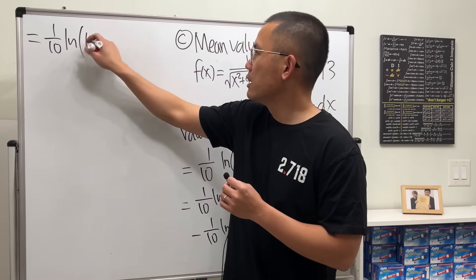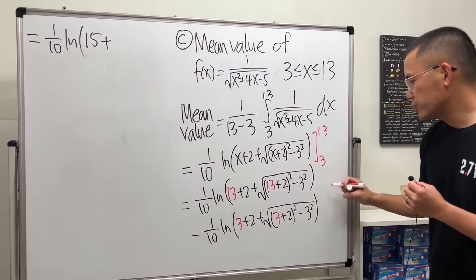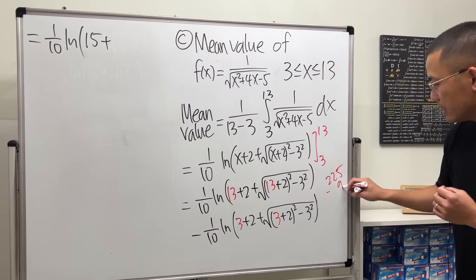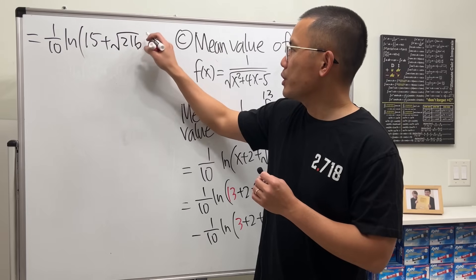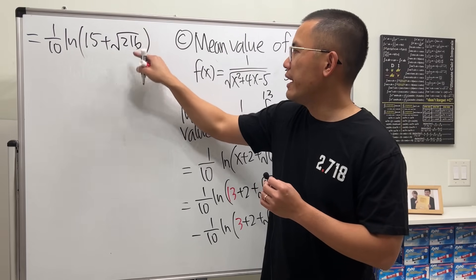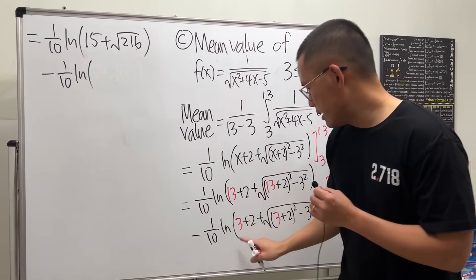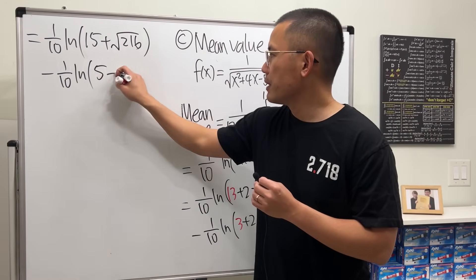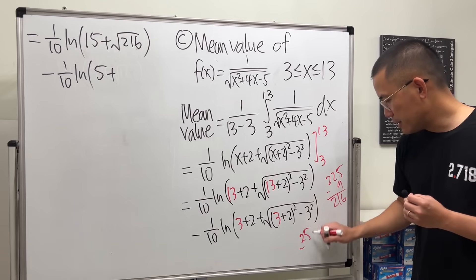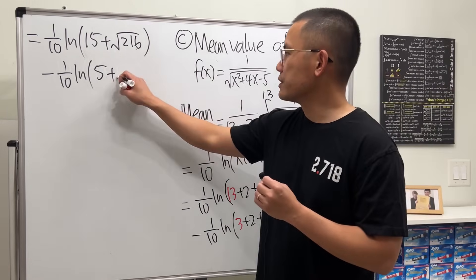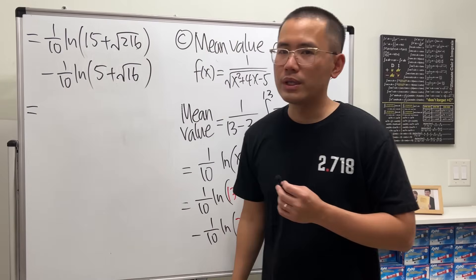Computing this: we have (1/10) × ln of (15 + √(15² − 9)), which is 15 + √(225 − 9) = 15 + √216. Then we subtract: ln of (5 + √(5² − 9)) = 5 + √(25 − 9) = 5 + √16. Because the answer wants us to write it in the form a·ln(b), I'm going to combine them.